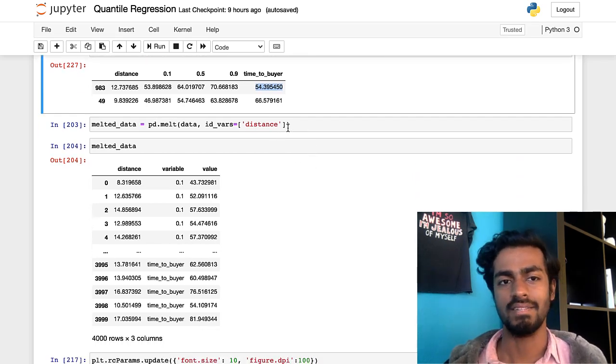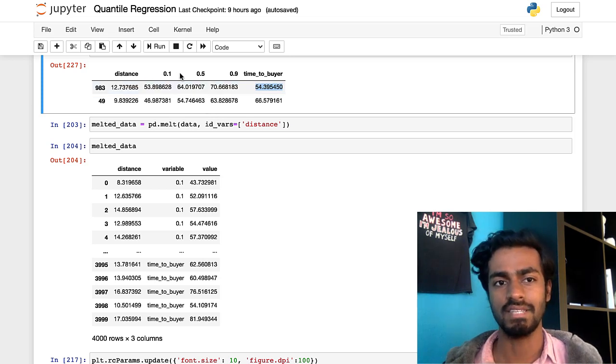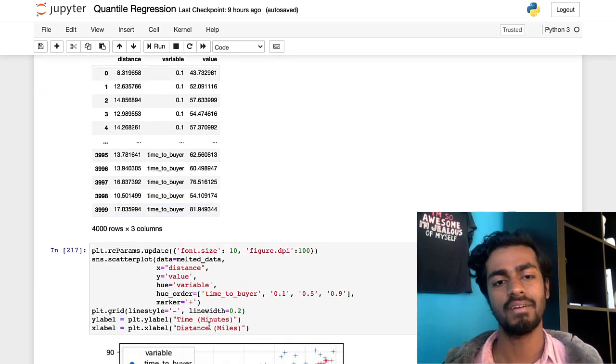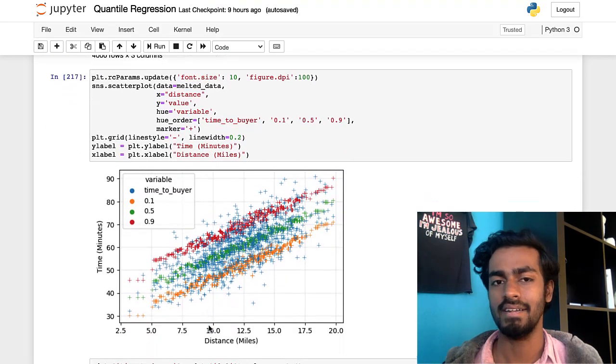Next I'm doing something called melting this data frame. Basically you take all of this and you convert all these columns into just like a single row of values and then have their corresponding value in each cell reflected in this value column. I do this because in this next part I wanted to plot the data out.